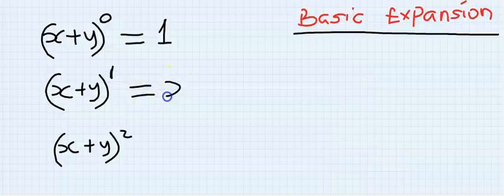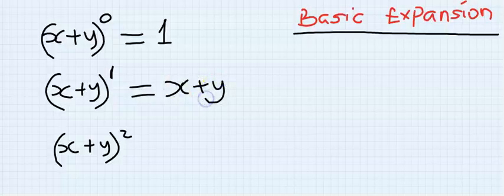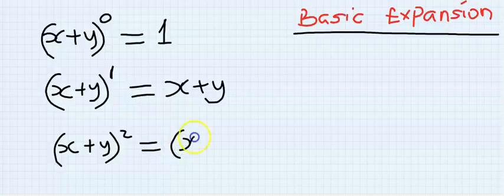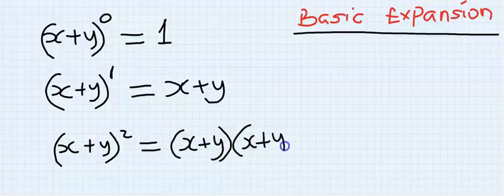In the next example we have only one, so the bracket is just one and everything inside returns as is. In this case the bracket is two, so we have to expand the bracket twice.